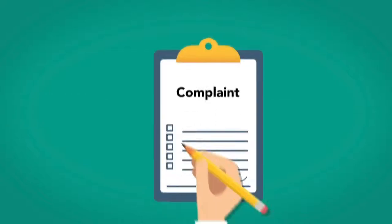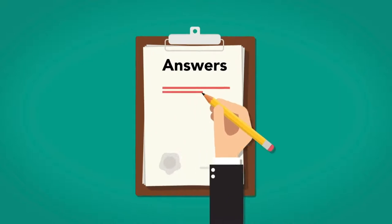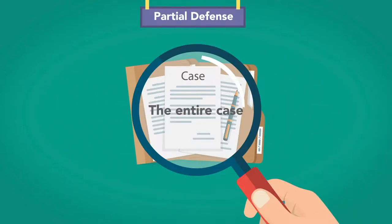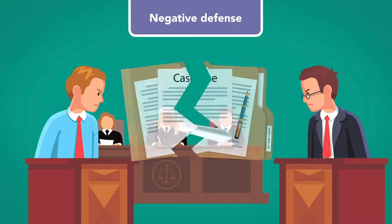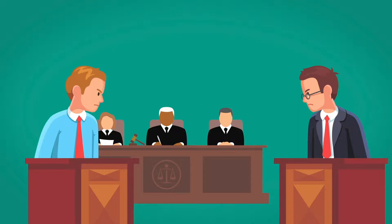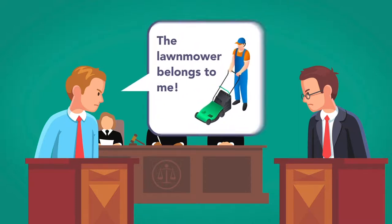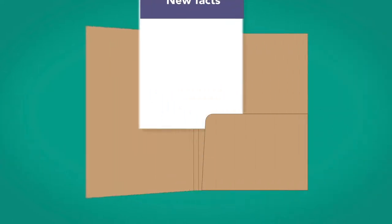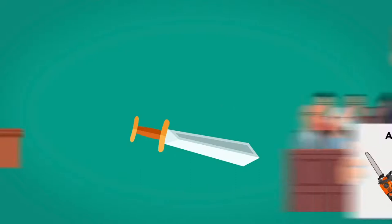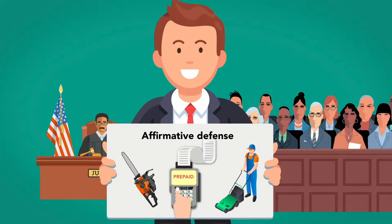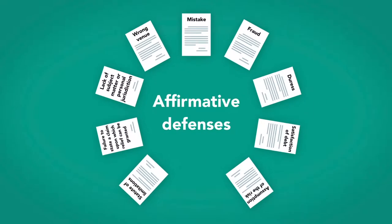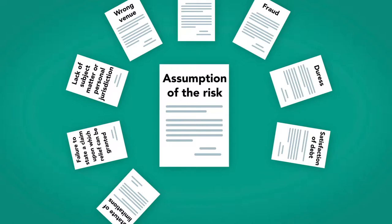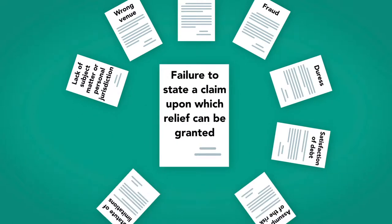Defenses. After either admitting or denying the paragraphs in the complaint, the answer must assert any defenses, partial or complete. A partial defense, if proved, can defeat part of the case. A complete defense can defeat the entire case. A negative defense attacks the elements of the other party's case, such as by stating that an allegation never happened. In our case, a negative defense might be the neighbor stating that the lawnmower really belonged to him. An affirmative defense does not directly deny the allegations of the claim it is responding to. Instead, an affirmative defense alleges new facts that, if true, can defeat the claim. For instance, in the lawnmower case, an affirmative defense could be that the lawnmower and chainsaw were bought and paid for. There are numerous affirmative defenses possible, including lack of subject matter or personal jurisdiction, wrong venue, mistake, fraud, duress, satisfaction of debt, assumption of the risk, statute of limitations, or the catch-all failure to state a claim upon which relief can be granted.